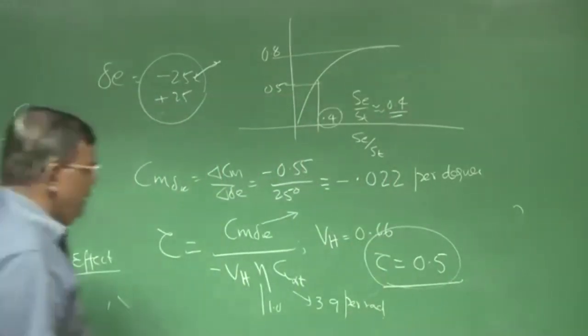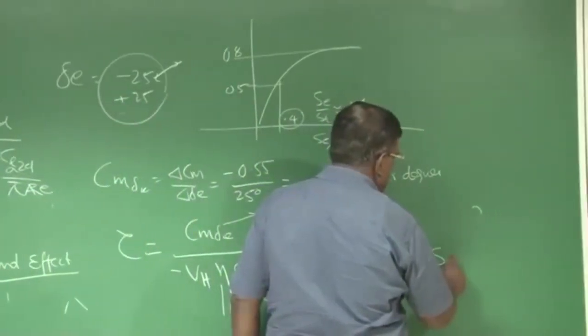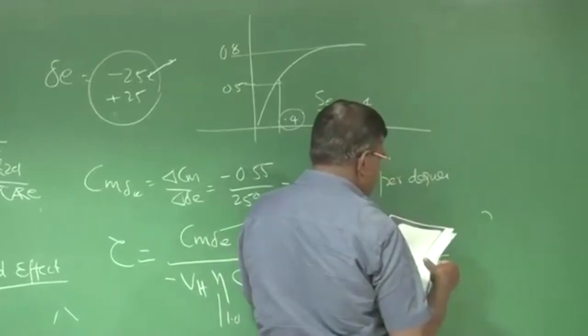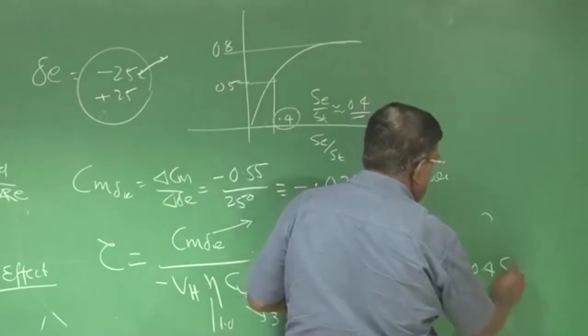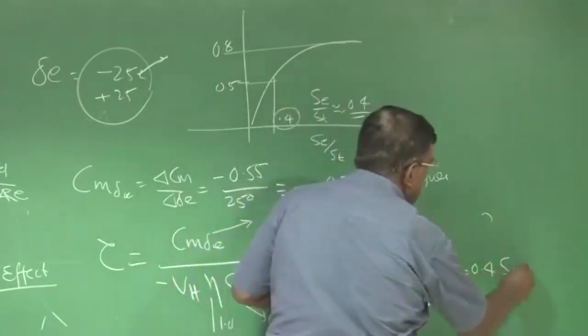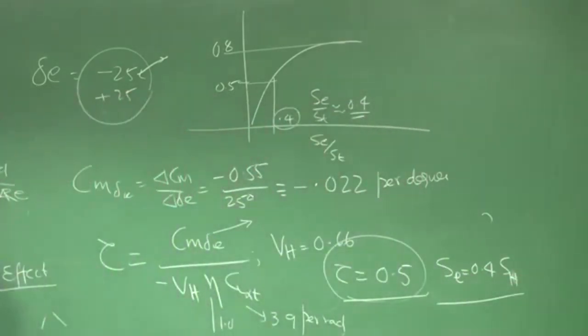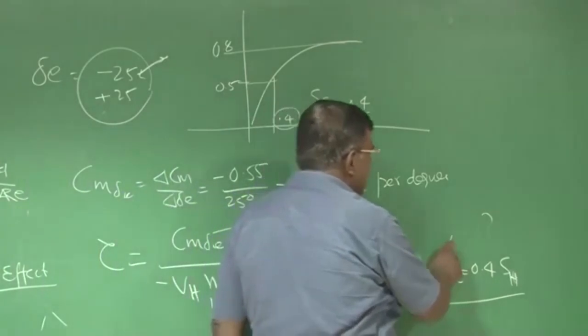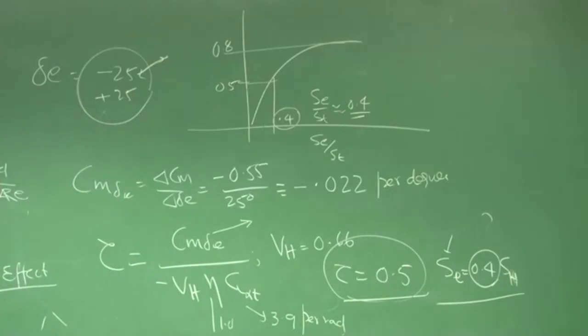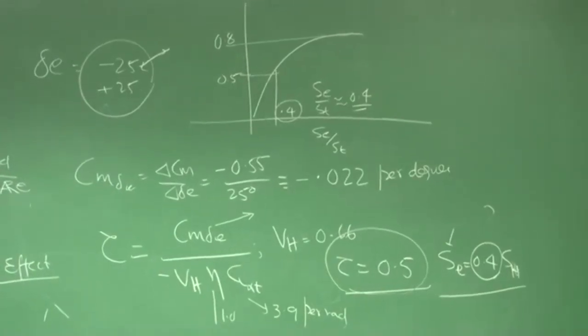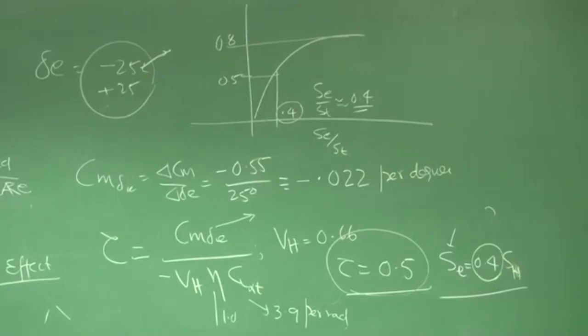So you can easily write here, if I want to trim this, I need elevator area as 0.4 times horizontal tail area, and you have already V_h, you have rough idea of what is the horizontal tail area. So you can easily find out elevator area, which again tells you that only 40 percent of that area, if it's rectangular, just take the 40 percent chord elevator, that will suffice your initial estimates.